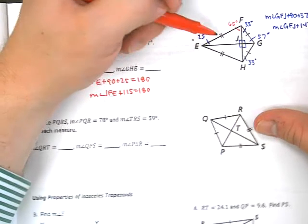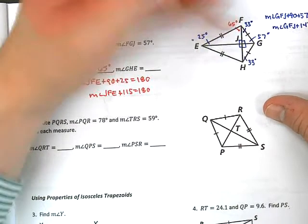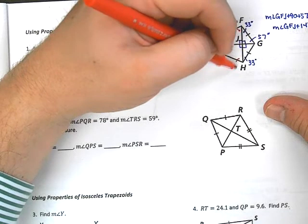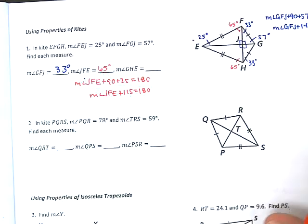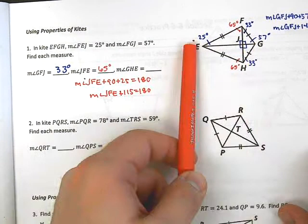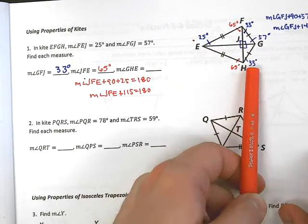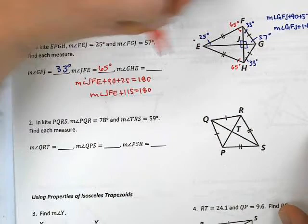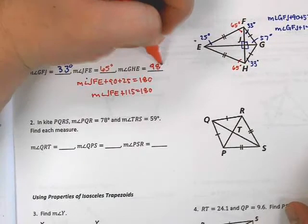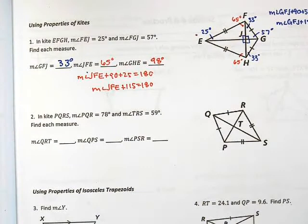So, 65 degrees. What else can I do? Because this triangle is isosceles, right, this left triangle is isosceles, I know that over here is 65 degrees as well. Lastly, it asks me for GHE. Well, GHE is just a combination of this 33 degree angle and 65. So, I add them, 98 degrees, and we are done with the first problem.